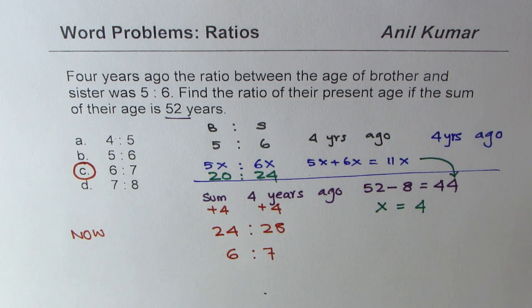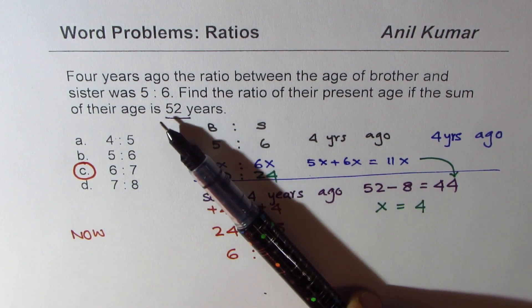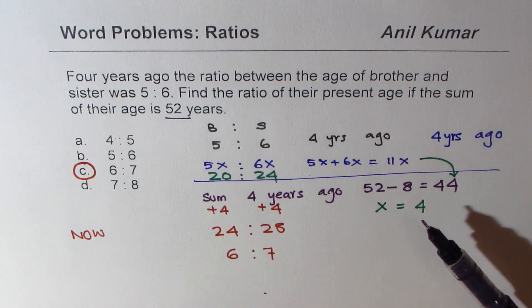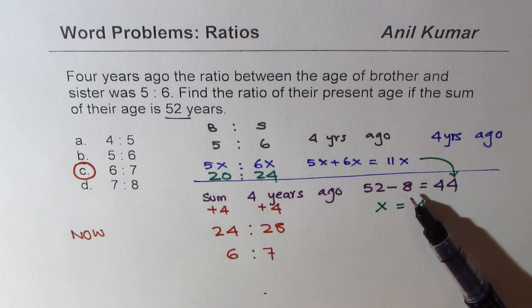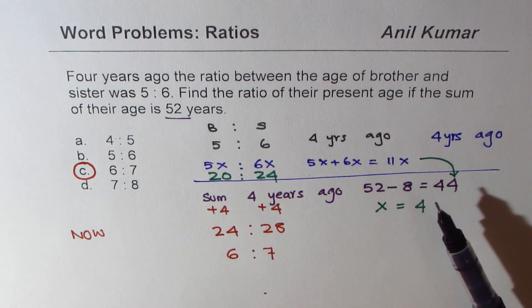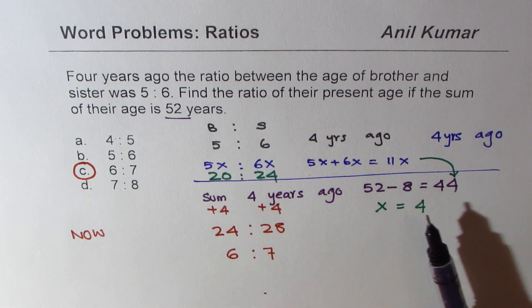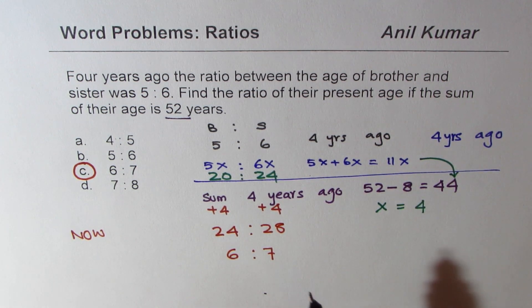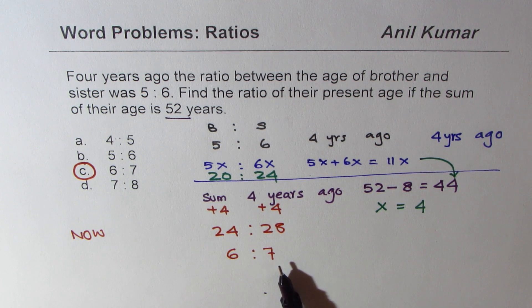So we can always very quickly without doing any calculations, you know, we can solve such questions. So if you look back and translate this 52 years as the age four years ago will be minus 8 for both of them, in that case it becomes much much simpler. You could have done the other way also, right. So I hope it makes sense.